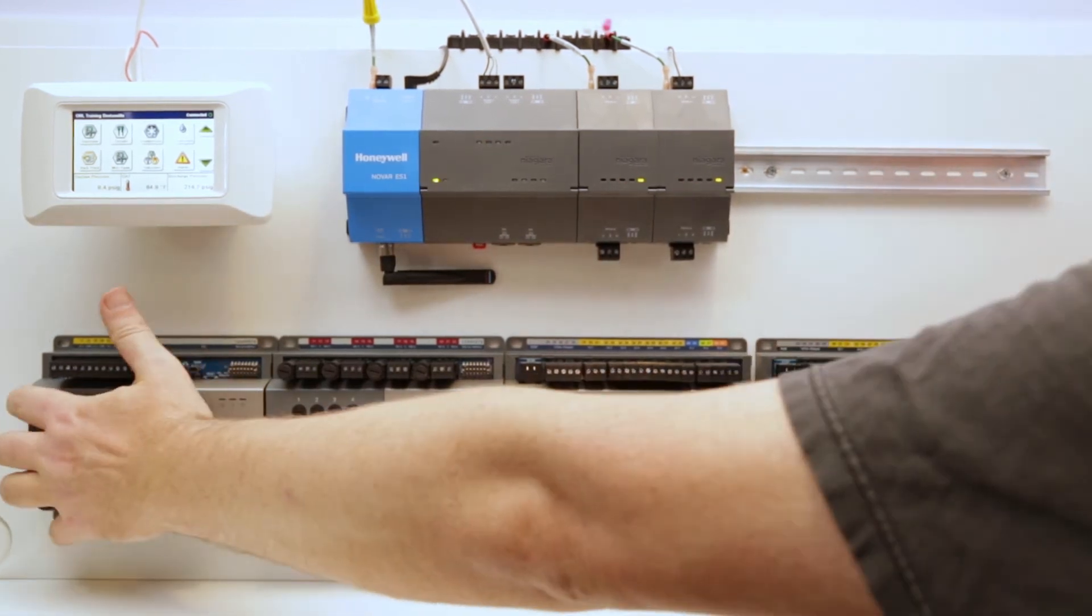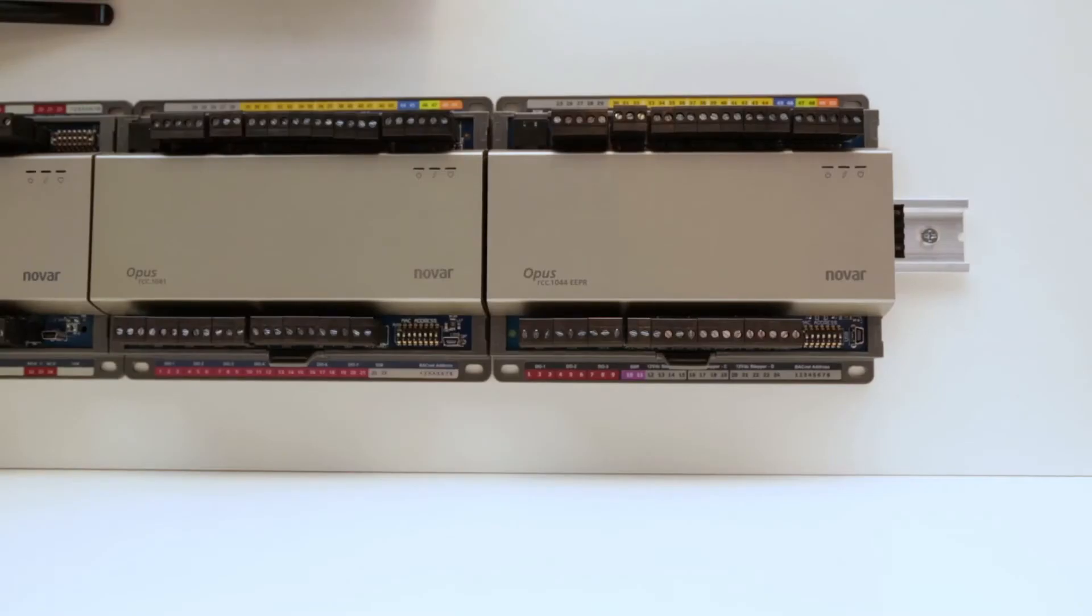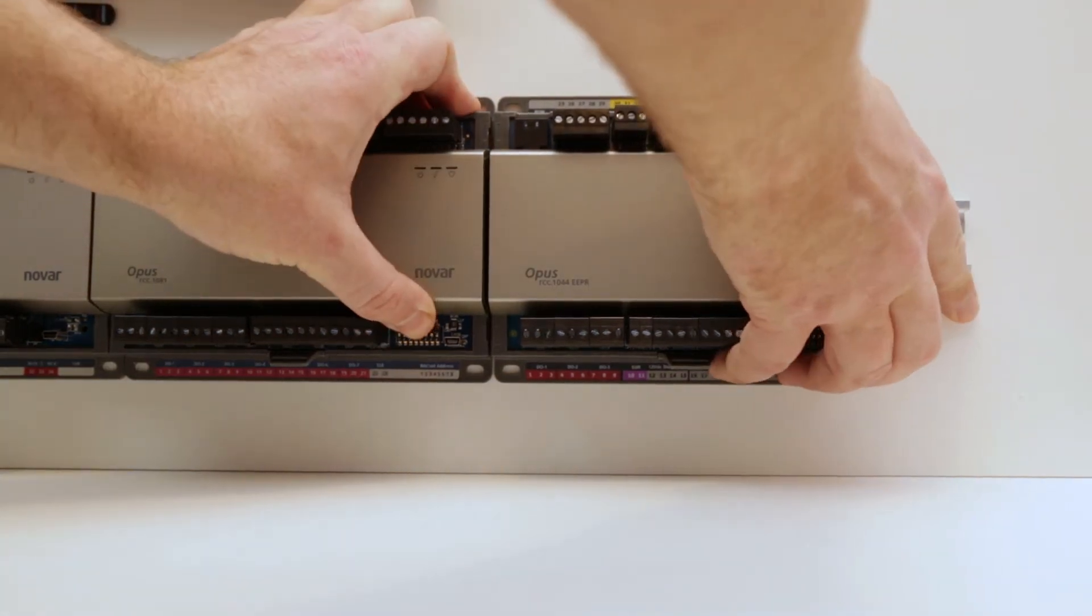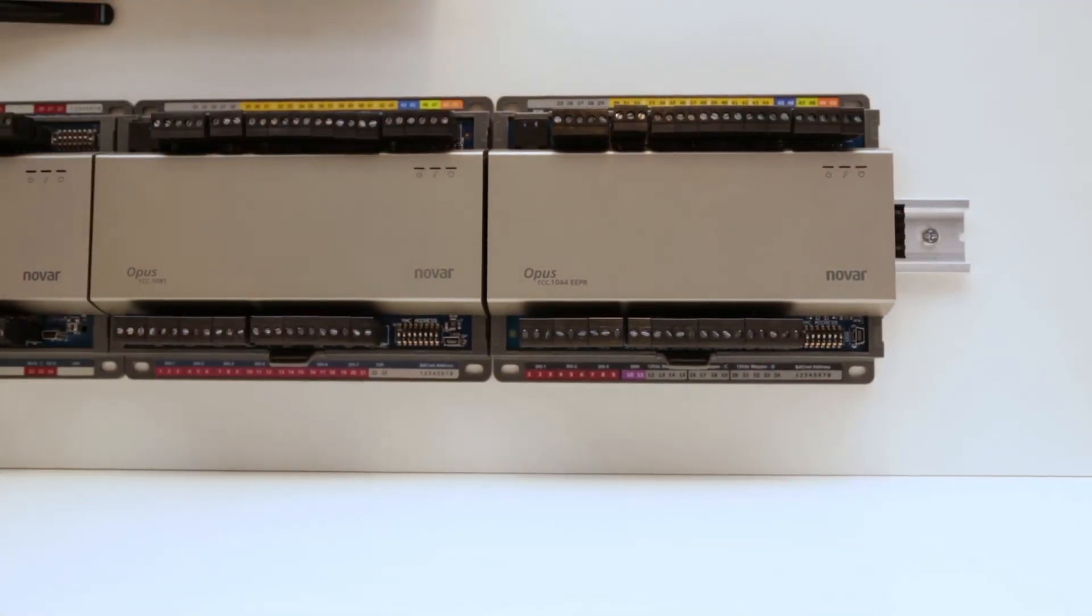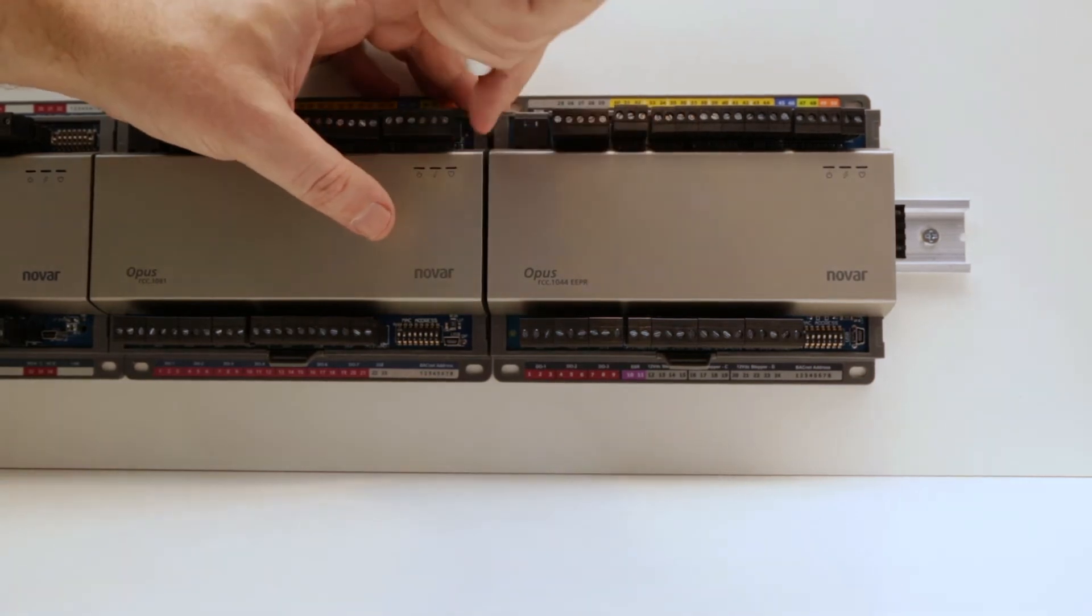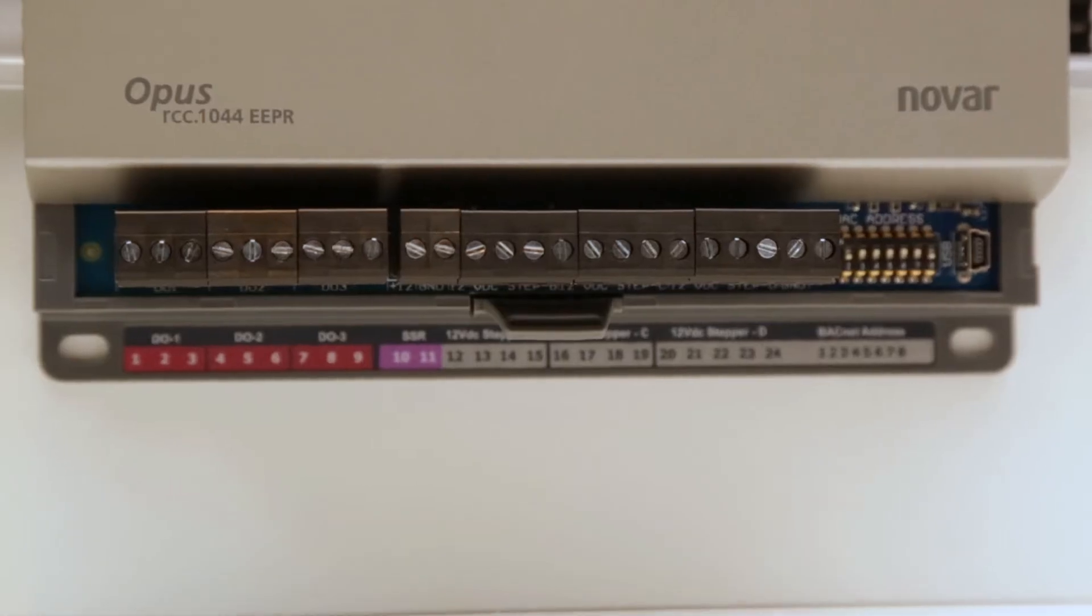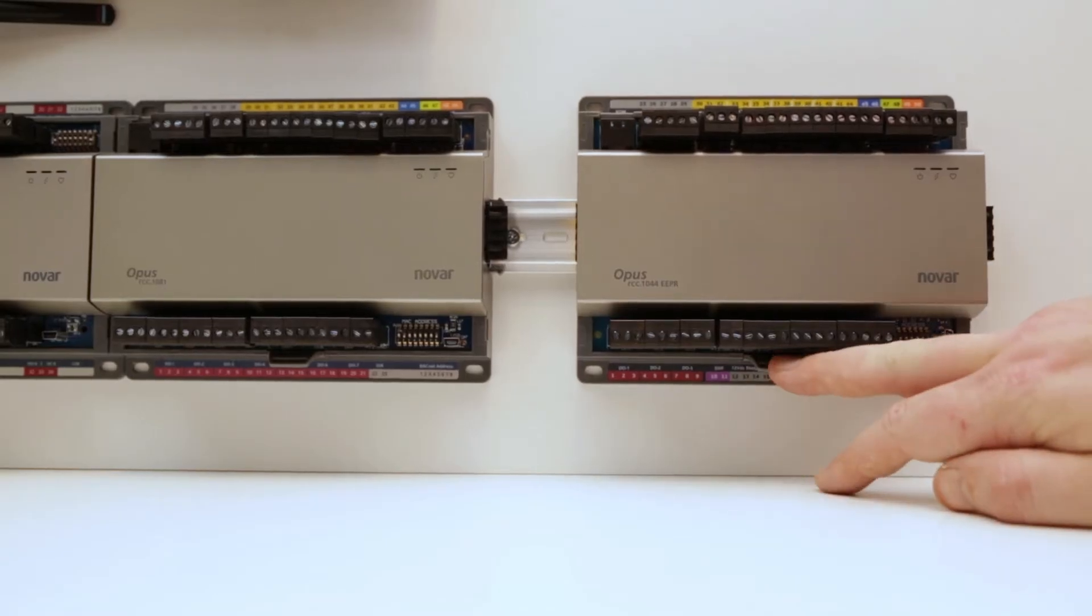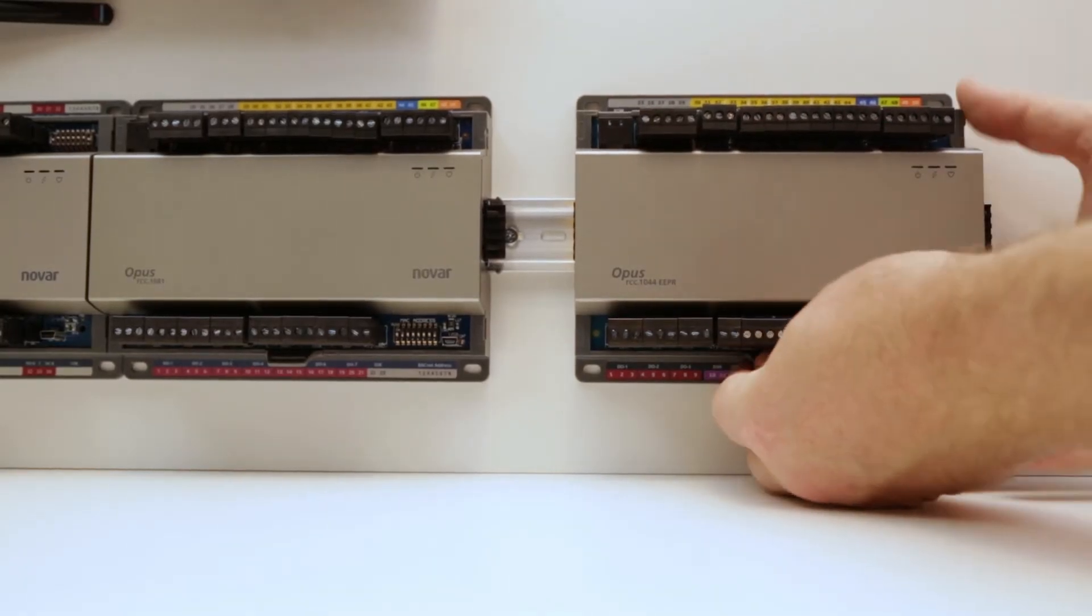To remove a module, simply pull the device being removed from the others in the series. This can be difficult to do on some installations, and a flathead screwdriver may be used to gently pry the bases of the two modules apart. Once separated, pull down on the locking release tab and lift the bottom portion away from the DIN rail.